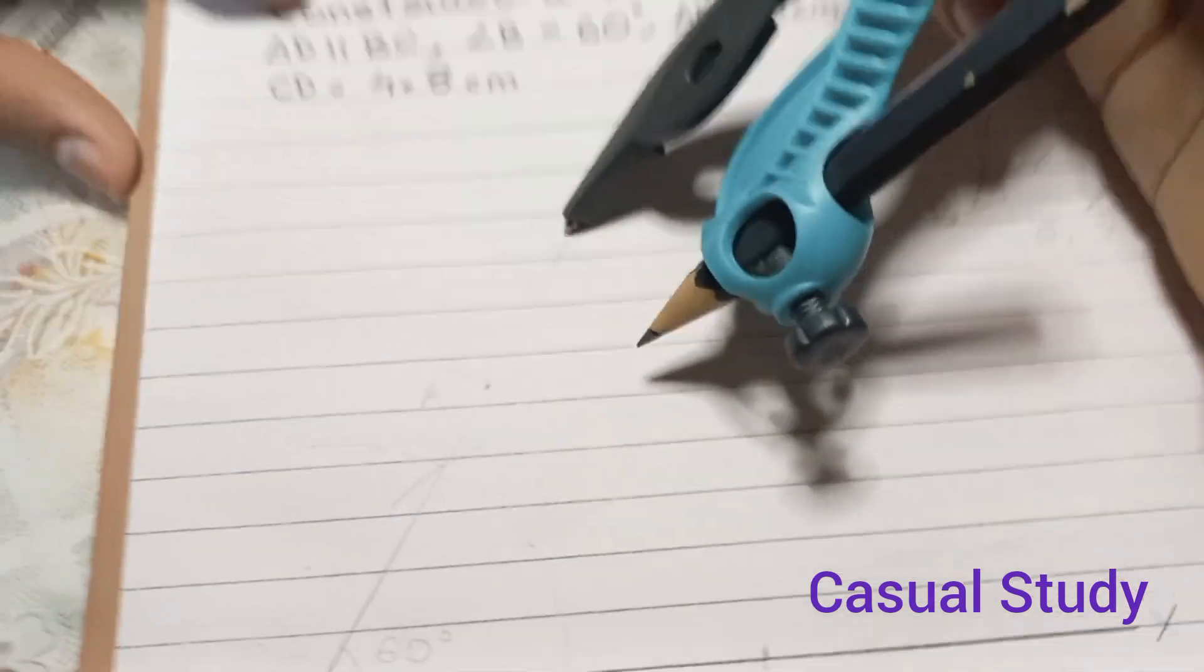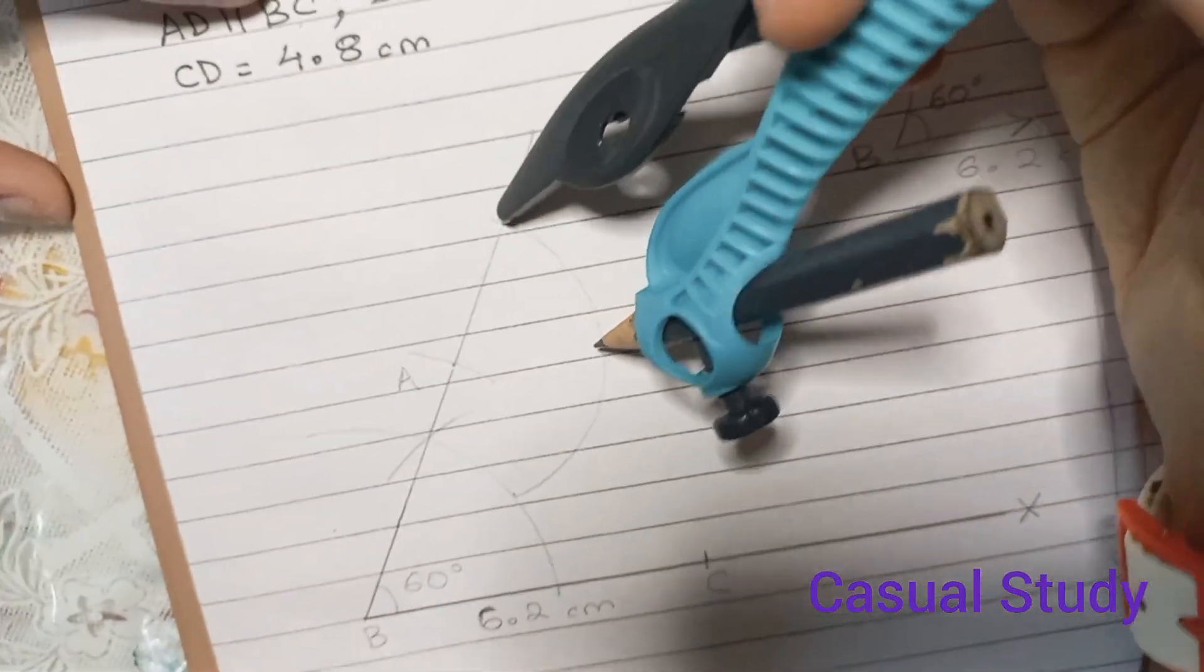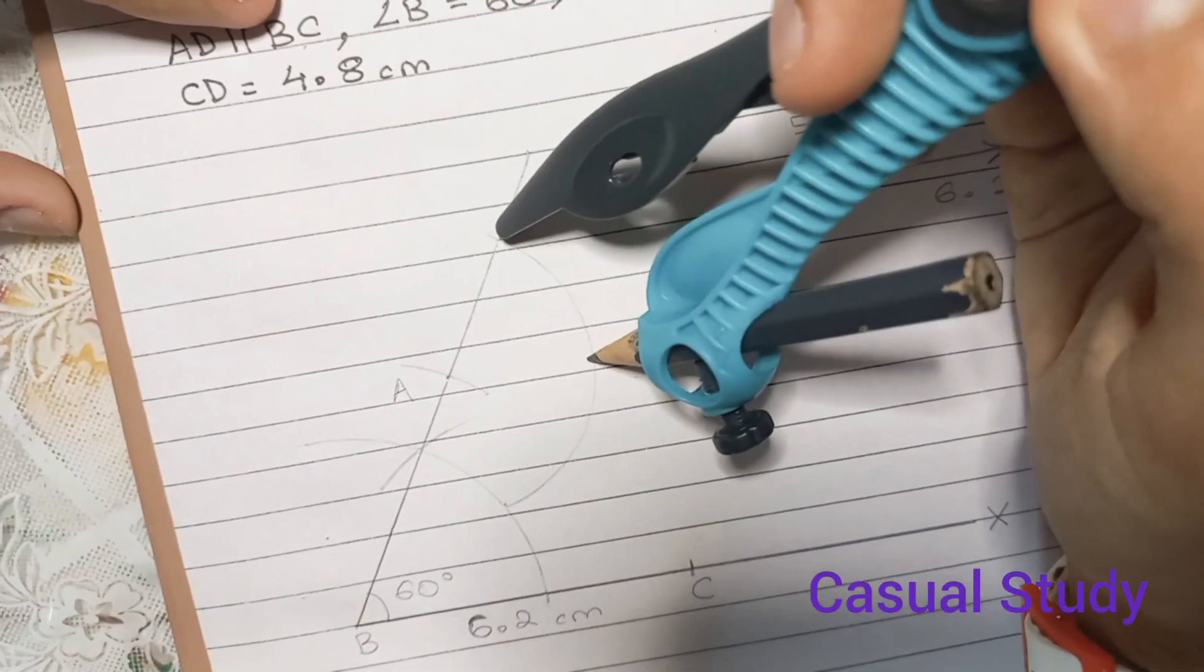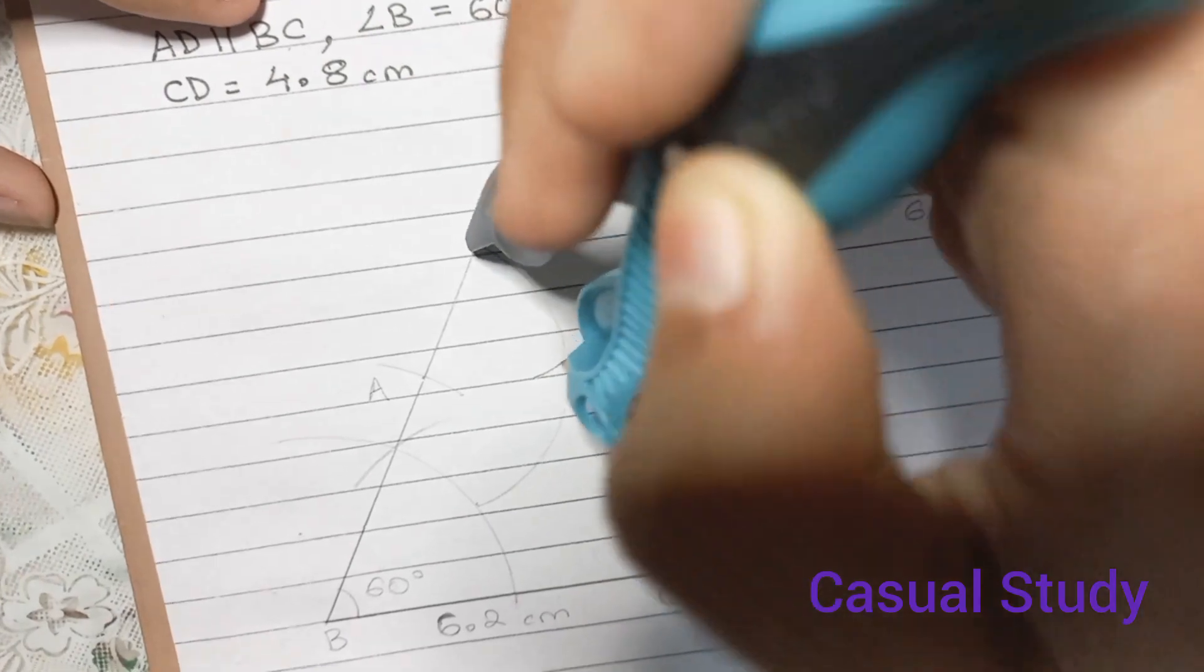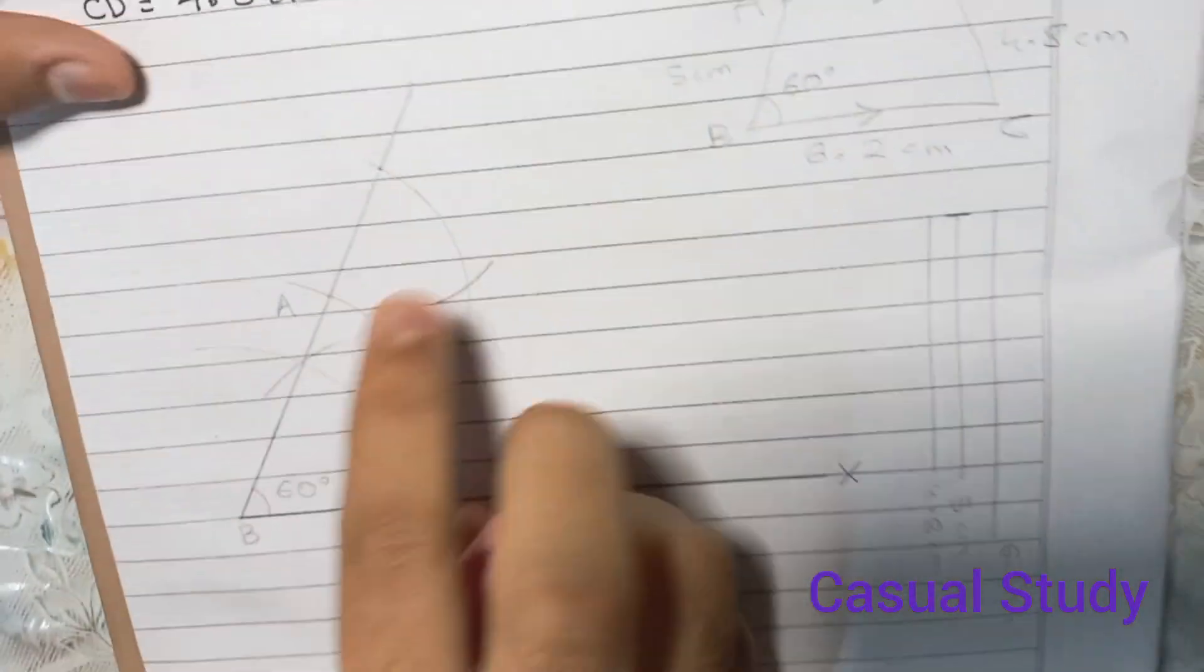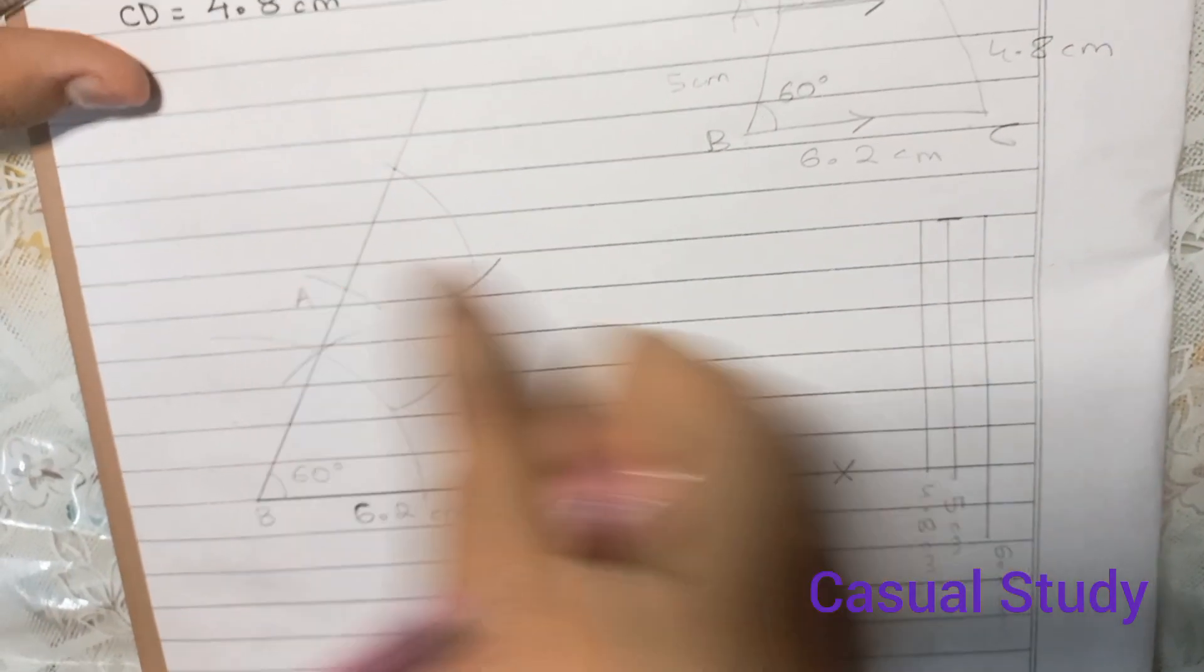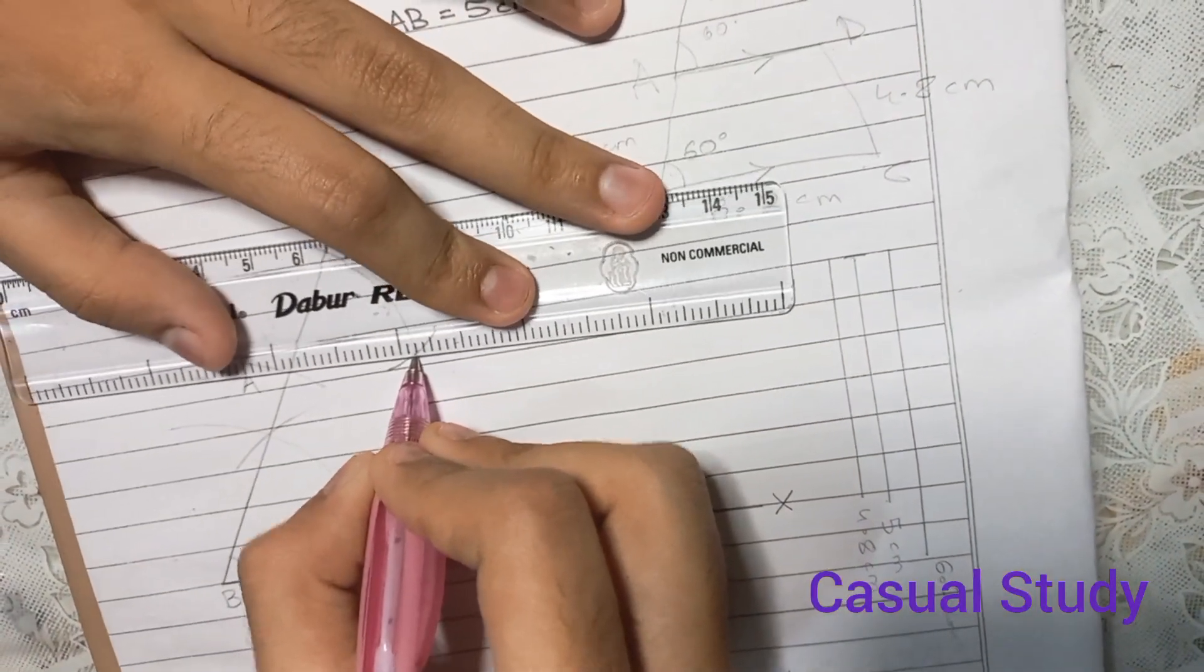We have made an arc and from this intersection, we will keep our pointer and cut this arc. So now since this is 60 degrees, this will make a parallel line with our base BC.